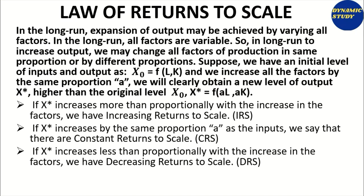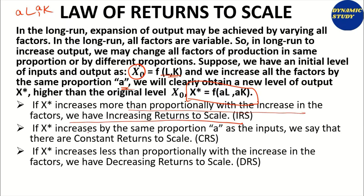The law of returns to scale is a long-run concept. Suppose output X₀ is a function of labor and capital. In the long run, both labor and capital are variable. Now, if you increase labor and capital by a proportion and get X*, then: if X* increases more than proportionately with the increase in factors, we have increasing returns to scale; if it increases in the same proportion, we have constant returns to scale; and if X* increases less than proportionately, that is decreasing returns to scale.